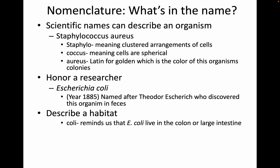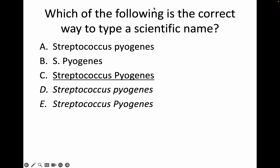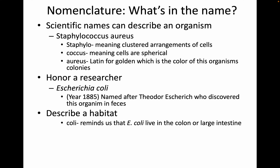These names can describe an organism. Staphylococcus aureus: the prefix staphylo means clustered arrangements of cells, coccus tells us the cells are spherical in shape, and aureus is the Latin word for golden, which is the color of these organisms' colonies. Sometimes names honor a researcher — Escherichia coli was discovered in 1885, named after Theodor Escherich. Sometimes they describe a habitat: coli reminds us that E. coli live in the colon or large intestine.